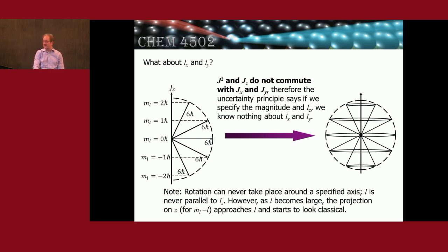But quantum mechanically, fundamentally, we can't know the axis about which something is rotating. We can only know how much total angular momentum it has as it rotates and its projection onto a single axis.